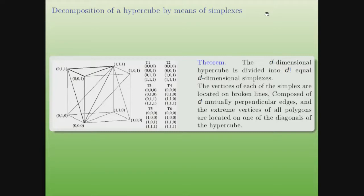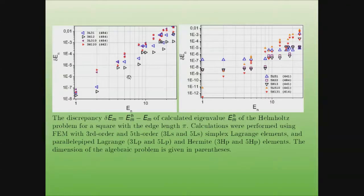For this, we use a decomposition of the hypercube into simplexes by choosing two opposite vertices and going from one to the other by edges of the hypercube. On this picture, the discrepancy of the calculated eigenvalue of the Helmholtz problem on a square — which has integer eigenvalues — is presented for schemes with fourth-order and fifth-order Lagrangian interpolation polynomials.